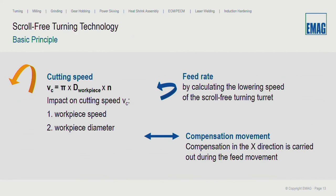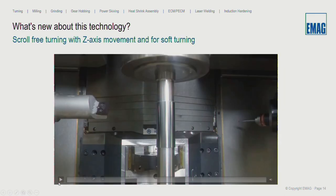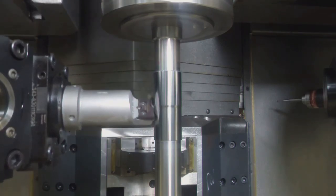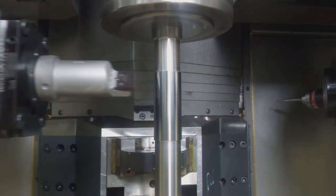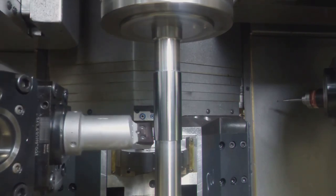The cutting speed is achieved like conventional turning with the diameter of the workpiece. The feed rate is done with the scroll free turning turret rotation and you need this compensation movement. The X axis is specially prepared for this kind of technology. Let's start the video. Here you see the rotation of the turret and the movement of the cutting point along the cutting edge.